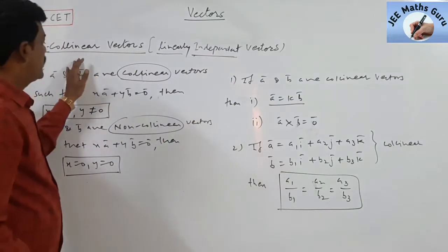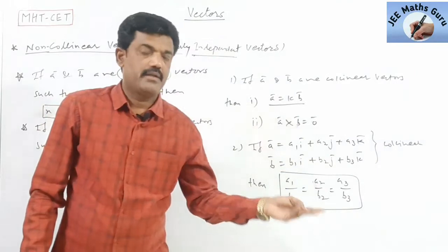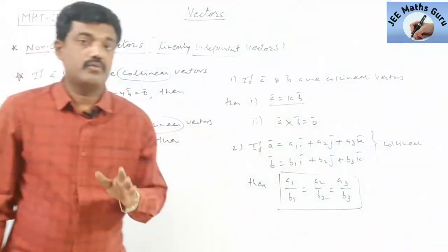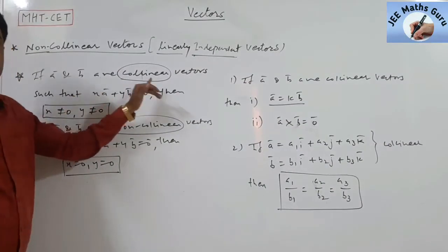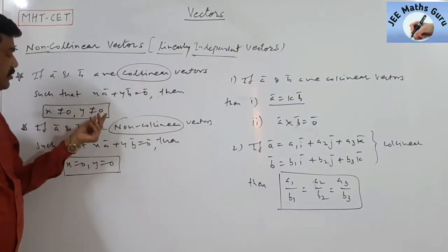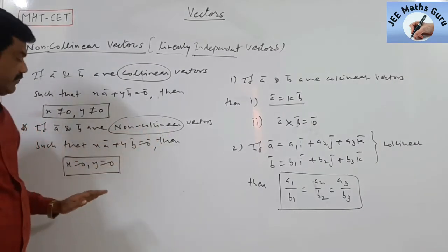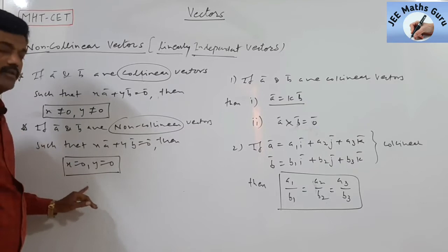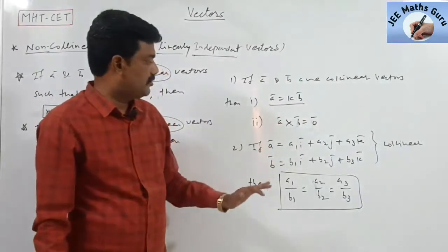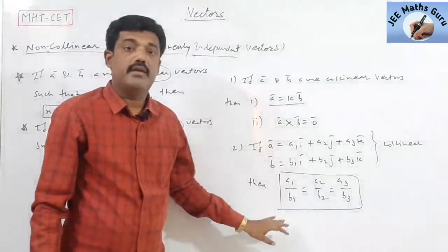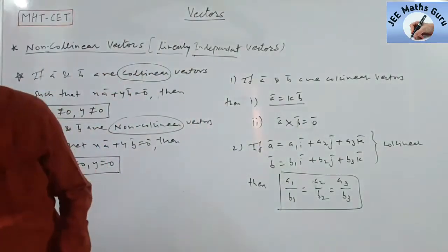To repeat the key results: collinear vectors are linearly dependent, and non-collinear vectors are linearly independent. If A and B are collinear and XA plus YB equals zero, then X is not equal to zero and Y is not equal to zero. If A and B are non-collinear and XA plus YB equals zero, then X equals zero and Y equals zero. For collinear vectors: scalar multiple holds, cross product is zero, and components are proportional.